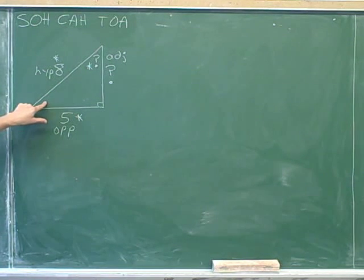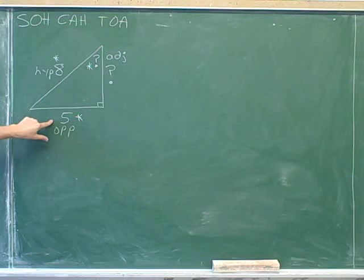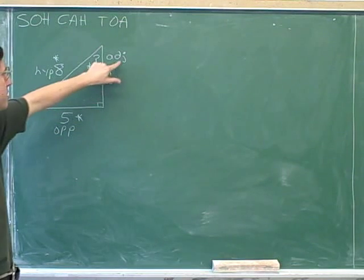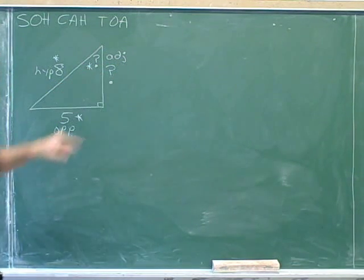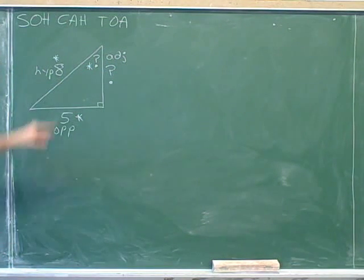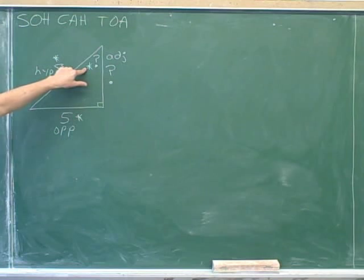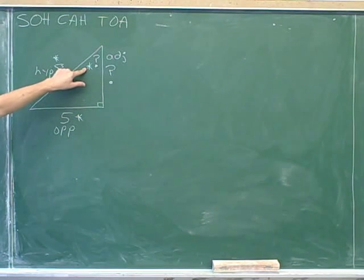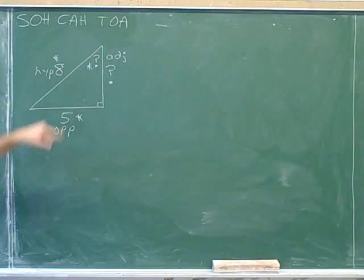If we had chosen to focus on this angle, then this side would have been adjacent and this side would have been opposite. So it's very important to be clear about which angle you're focusing on. An asterisk can help you keep remembering which angle you're focusing on.